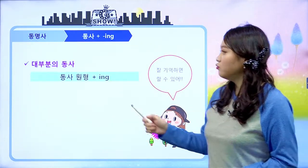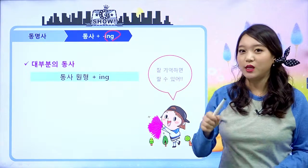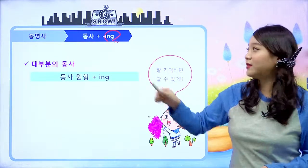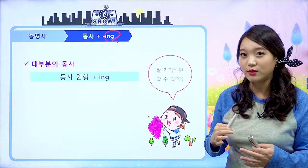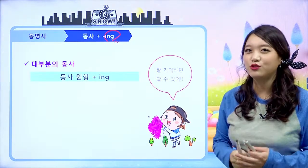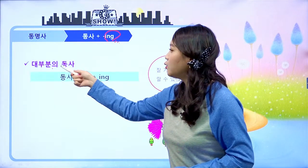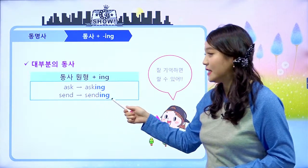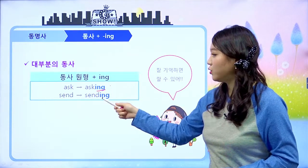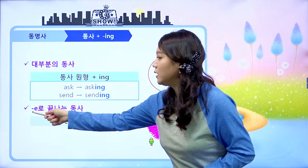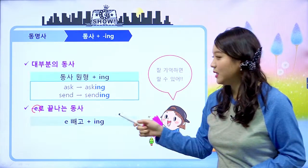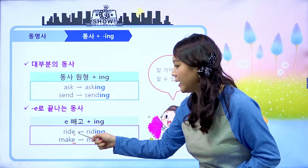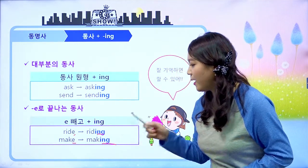동사에 ing 붙이는 방법을 현재 진행형이랑 과거 진행형 만들 때도 배웠는데 한번 짚고 넘어가보겠습니다. 대부분의 동사는 동사 원형에 그냥 ing만 붙이면 돼요. 예를 들면 asking, sending 이런 식으로요. e로 끝나는 동사는 e를 빼고 ing를 붙입니다. 예를 들면 write, make 같은 경우 e를 빼고 ing를 붙여서 writing, making 이렇게 됩니다.